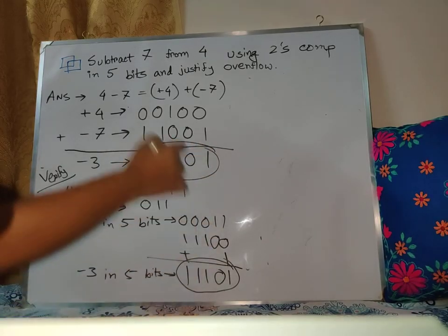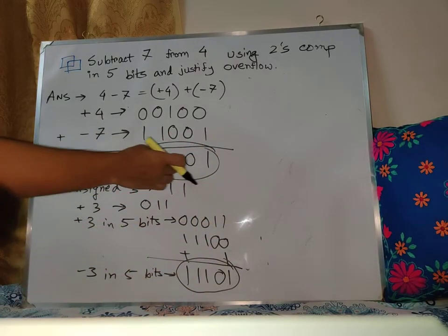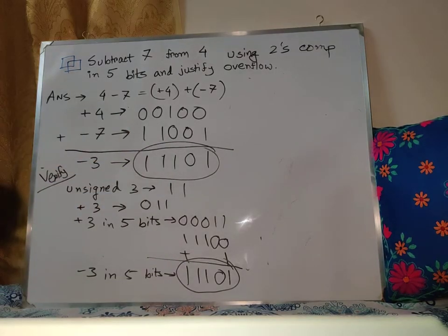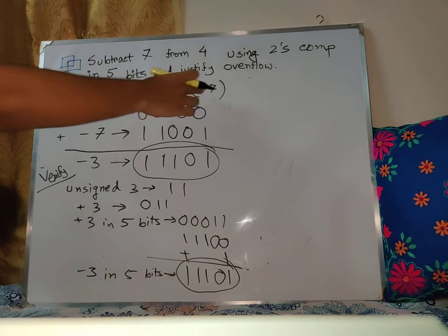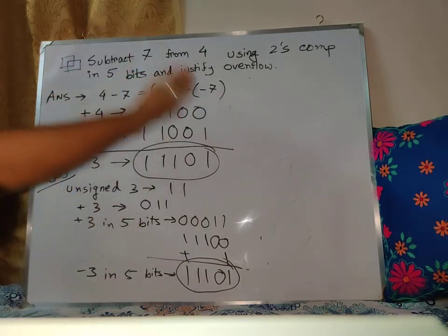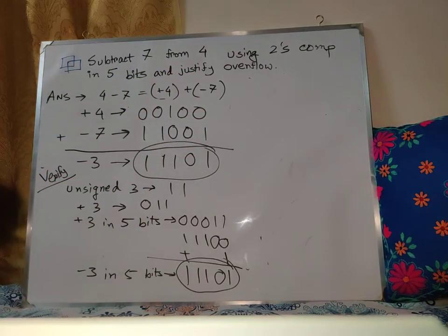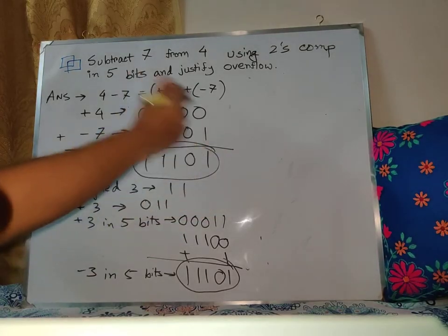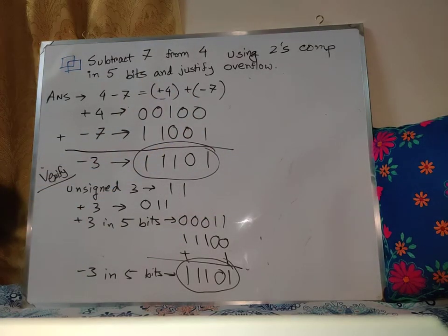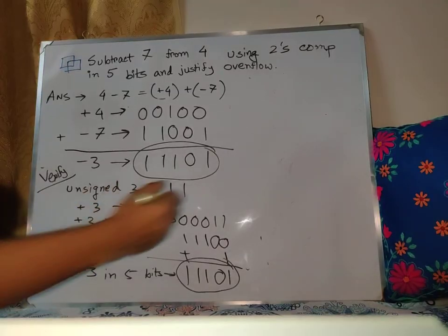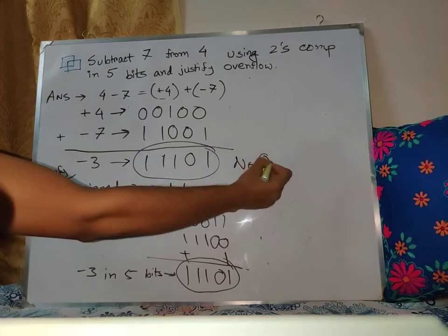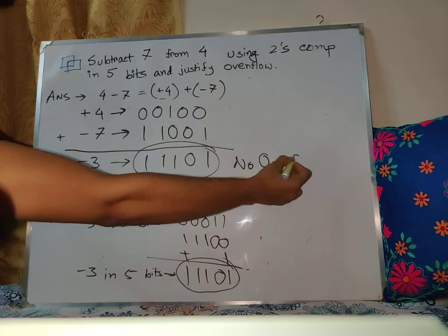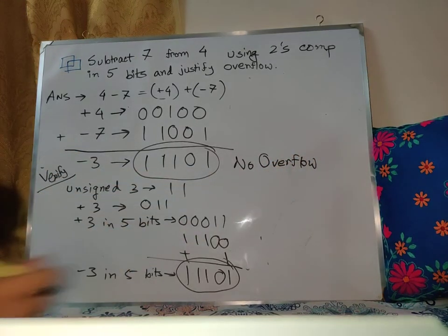We can clearly see that minus 3 in 5 bits number and our result number are exactly the same. So definitely our answer is minus 3. Our answer is completely correct. And regarding overflow, if we talk about it, we added two different sign numbers. When we add different sign numbers, there's no overflow. So that's why there will be no overflow. I have a link in the video description, you can check from there. So here there is no overflow. There will be no overflow, okay.